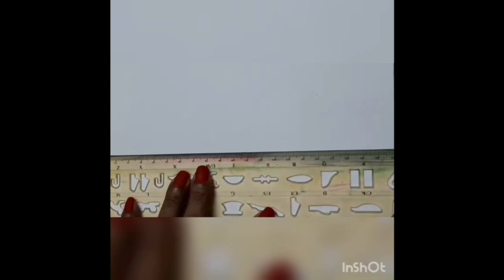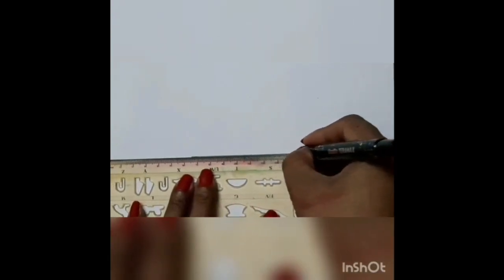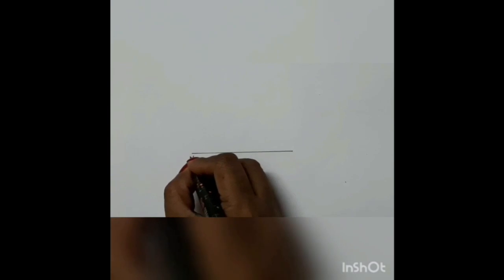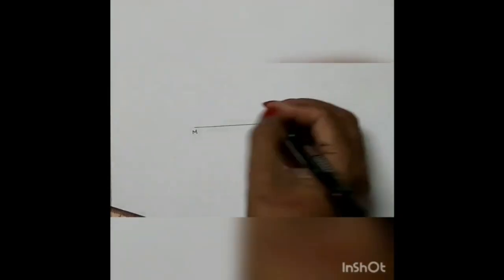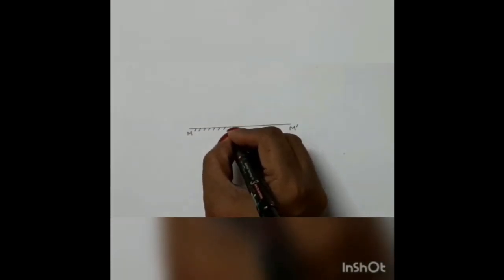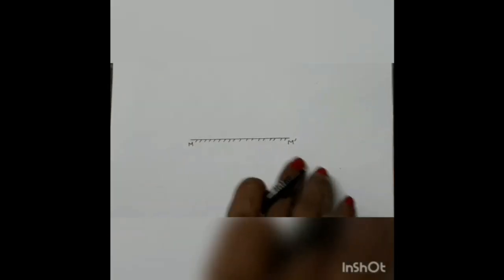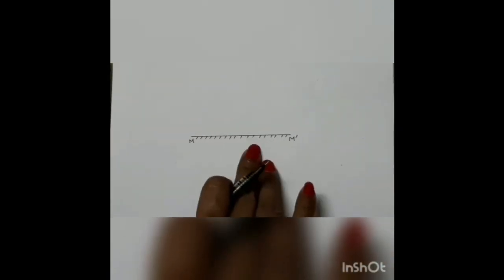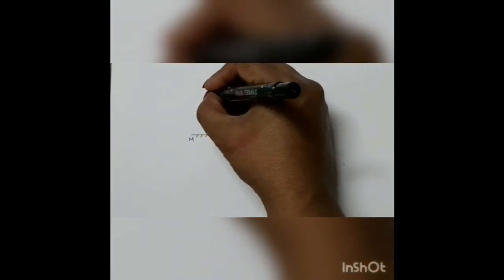We'll make a line, this line MM prime shows a piece of mirror and its reflecting surface. To show the reflecting surface we'll make these broken lines. This line shows that this side of the mirror is silvered or polished, so the opposite side becomes the reflecting surface. The image formation will take place on this side.